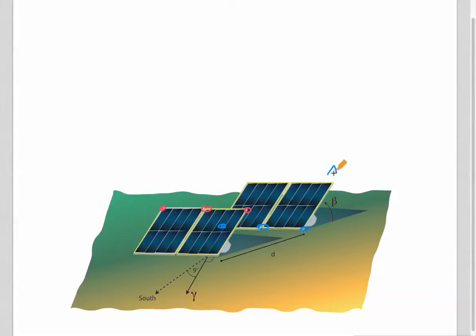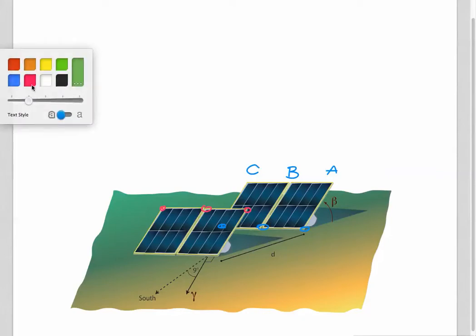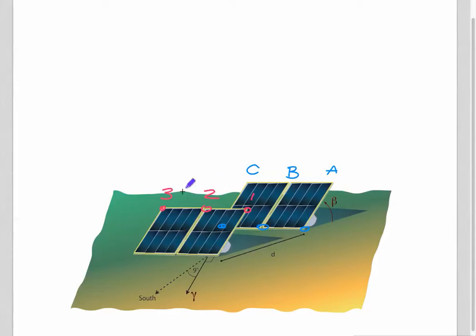So I'm going to name these critical points A, B, and C. And the points that we will be referring to in terms of what kind of shading are we expecting, we're going to label 1, 2, and 3.